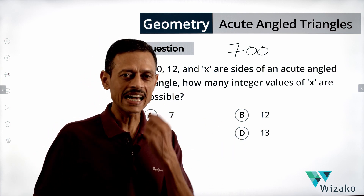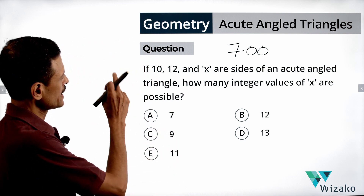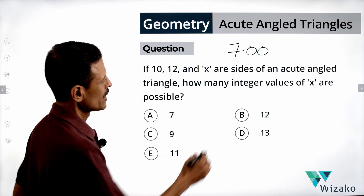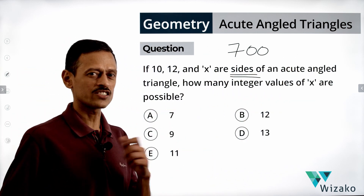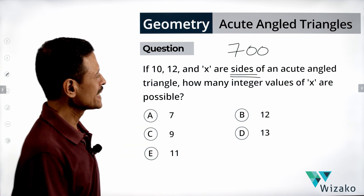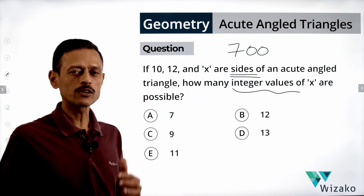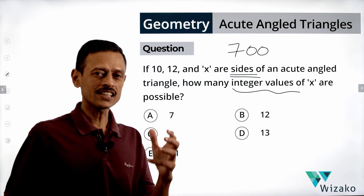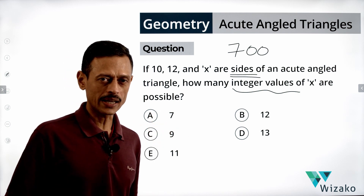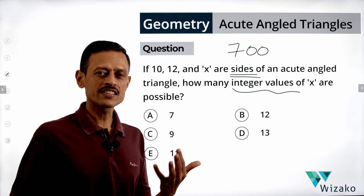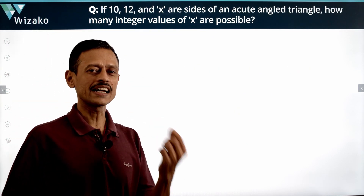Let's read the question. The question says: if 10, 12, and x are sides of an acute angle triangle, how many integer values of x are possible? What is given to us are the sides, not the angles. So we need to find how many integer values of x satisfy the condition that 10, 12, and x are sides of an acute angle triangle.